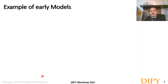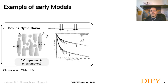To illustrate how microstructure modeling works, in this slide I'm showing early microstructure models used in the literature. This includes the Stanisz model to characterize the optic nerve by representing it with three compartments: spherical compartments to represent glia, ellipsoids to represent neurons, and extracellular space. This model contains only three compartments; however, to be properly fitted, Stanisz uses an extensive number of acquisitions from two gradient directions, a large number of gradient intensities, and different diffusion times.